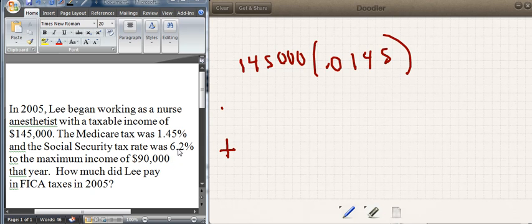And then now we got 6.2% of the maximum amount, because $145,000 is over the max, so it's going to be 0.062 times $90,000. And then once you find those, you just add them up. You're done. That's it. Let's do the math.